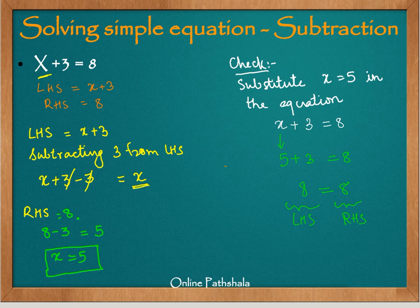I just want you to reflect a bit. What we have done here is isolate x and found out the value of x, which is 5. When we substitute this value, we see that putting that value of x gives us the same value on the right hand side of the equation. This is what we mean by an equation being a condition on a variable.